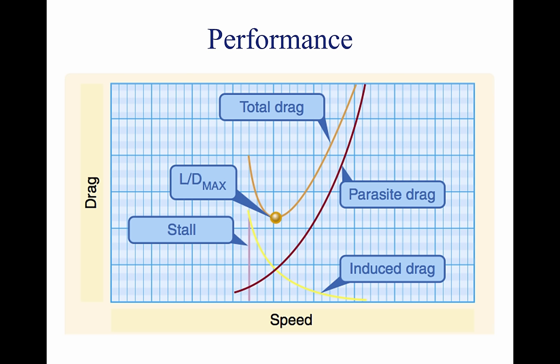Some of these factors are often directly opposed — for example, high speed versus short landing distance, long range versus great payload, and high rate of climb versus fuel economy. It is the preeminence of one or more of these factors that dictates differences between aircraft and explains the high degree of specialization found in modern aircraft. All of the principal components of flight performance involve steady state flight conditions and equilibrium of the aircraft.